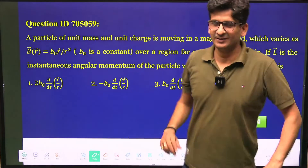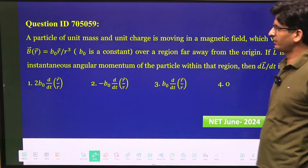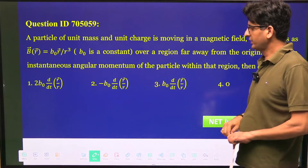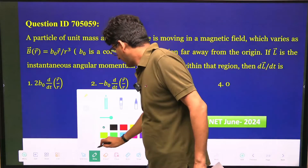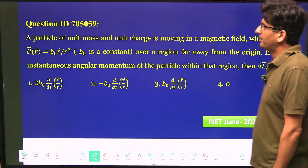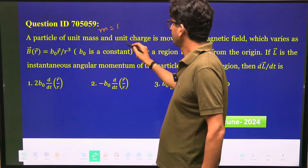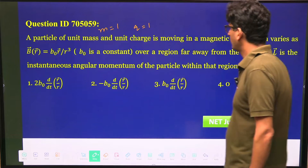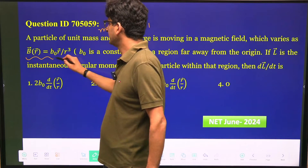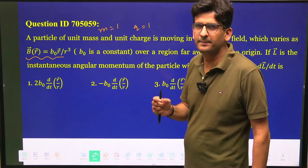Hello students, another question from CSIR NET June 2024 in physics - question ID 705059. This question is from electromagnetic theory. A particle of unit mass (M=1) and unit charge (Q=1) is moving in a magnetic field, and the profile of the magnetic field is given.